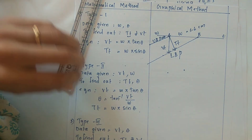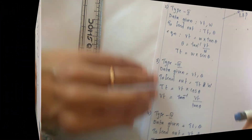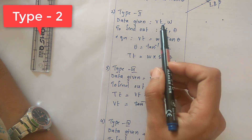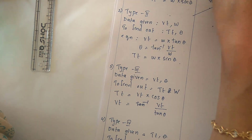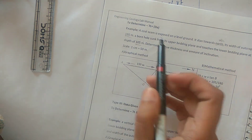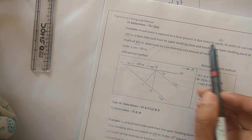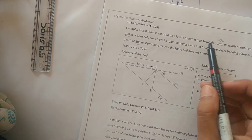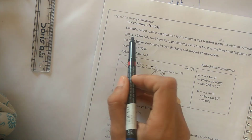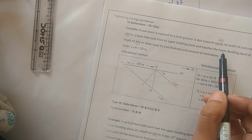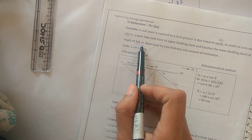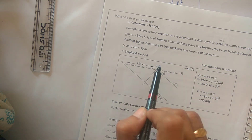Now we move to Type 2. Here, the data given are vertical thickness and W, and you have to find out true thickness and theta. In the example: A coal seam is exposed on a level ground, dipping towards west. Width of outcrop is 180 meters. A borehole sunk from its upper bedding plane touches the lower bedding plane at a depth of 105 meters. Determine true thickness and amount of inclination.